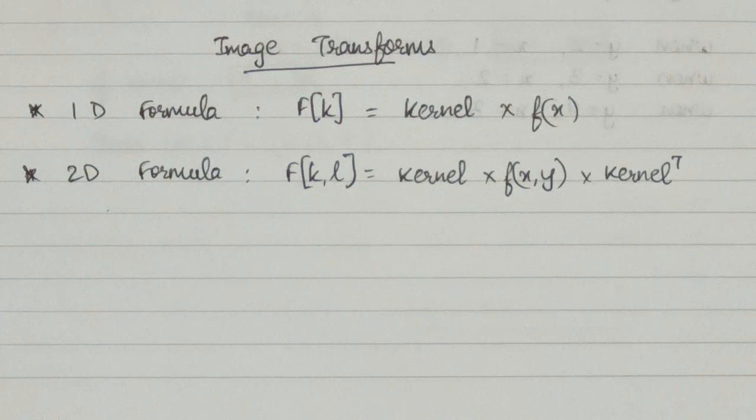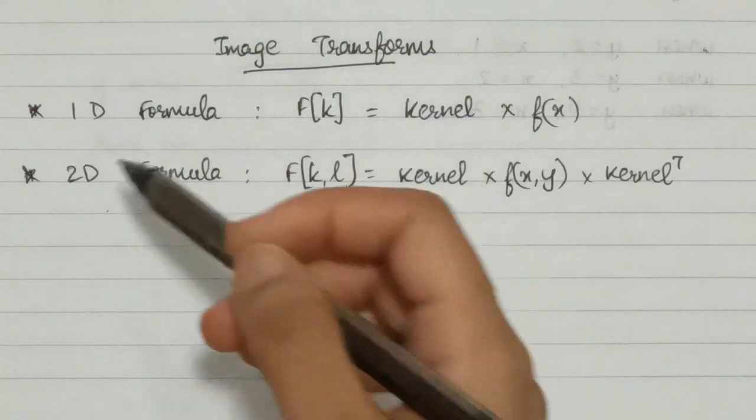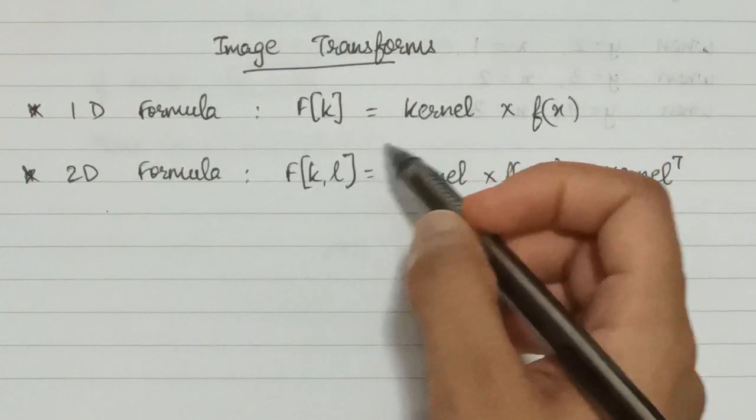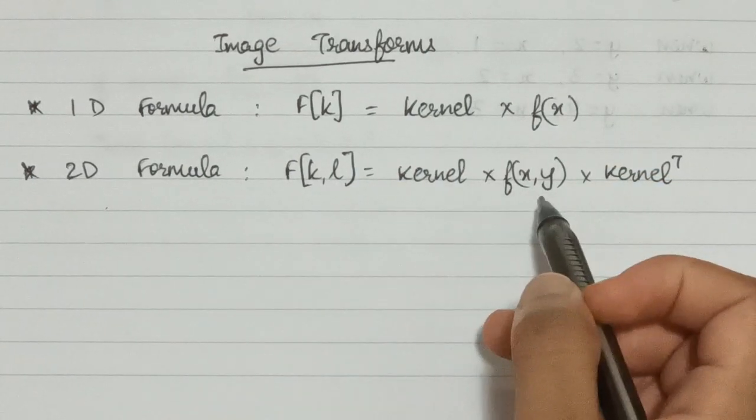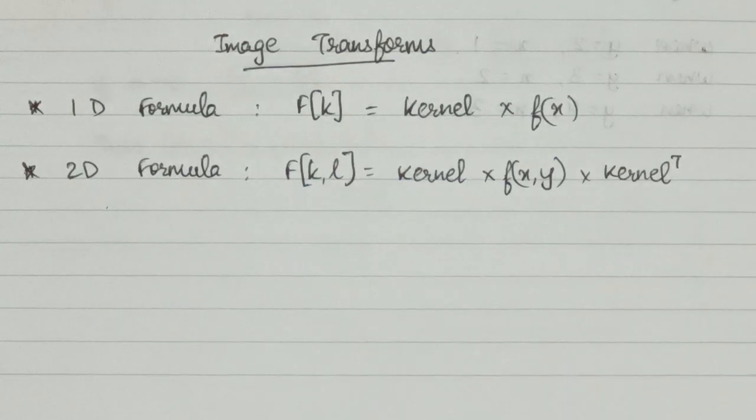With this we have completed DFT, DCT, and Haar Transform. I want you guys to remember that if it is any of these three transforms, the formula remains the same: For 1D, the formula is kernel × input image, whereas for 2D it is kernel × input image × kernel^T.